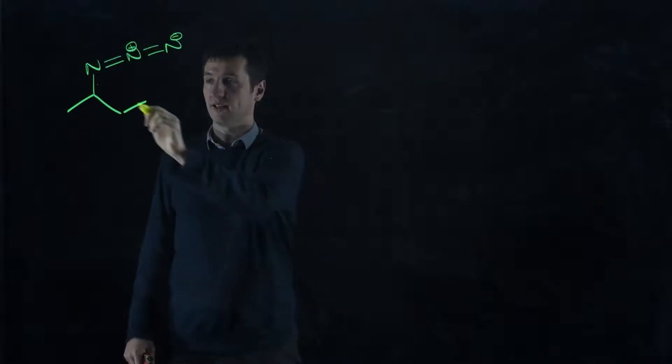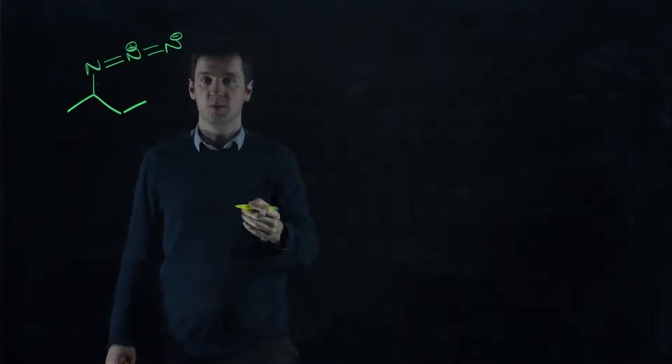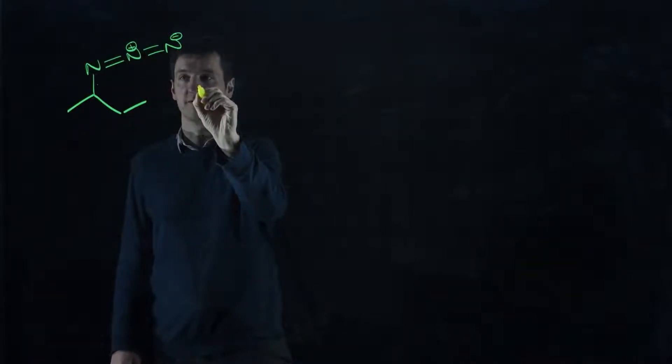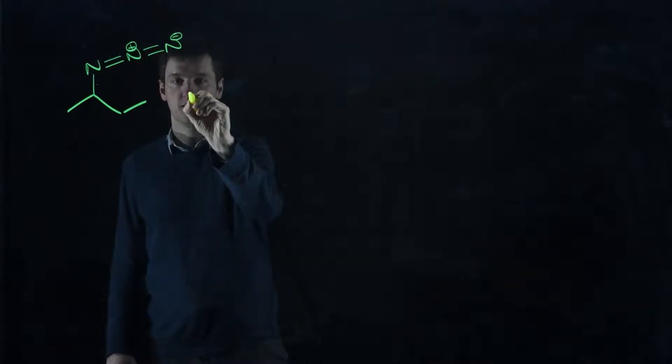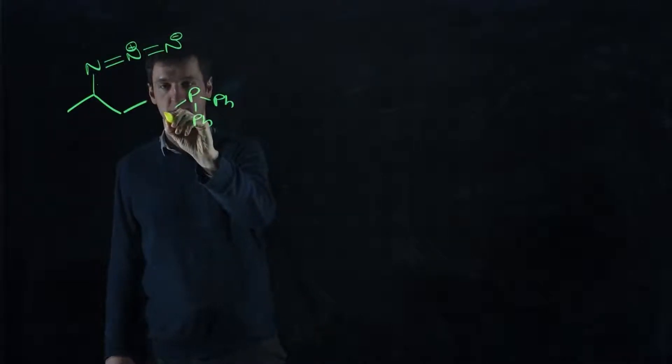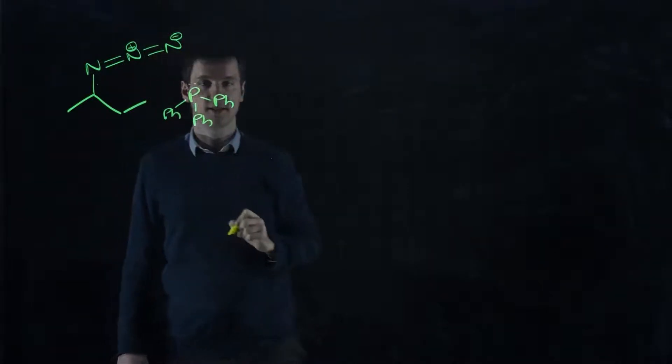Supposing we want to turn that into the primary amine. Well, we do it with triphenylphosphine. So phosphorus with three phenyl groups attached and it has a lone pair.